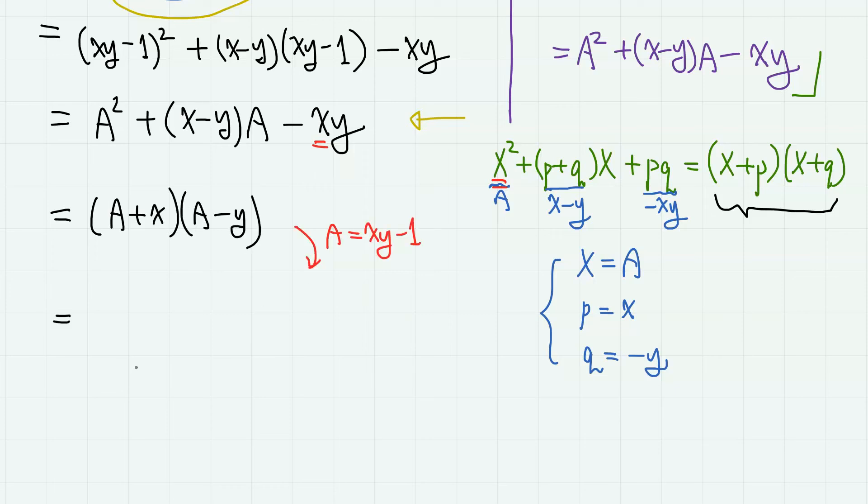And if we change a back into xy minus 1, we have our final answer, xy minus 1 plus x, times xy minus 1 minus y. And let's actually write down from higher degree to lower degree.